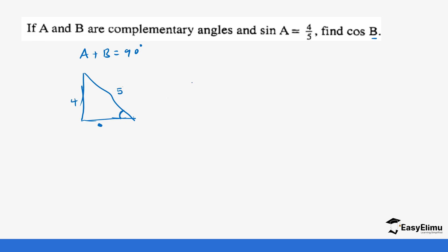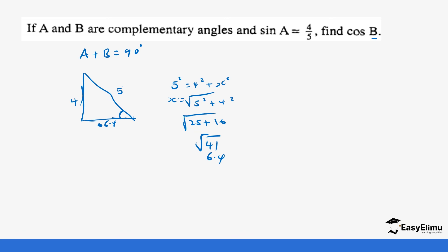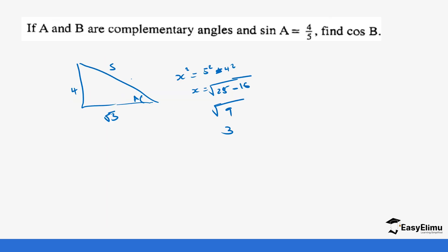Using the Pythagorean theorem: 5 squared equals 4 squared plus x squared, so x equals the square root of 5 squared minus 4 squared, which is the square root of 25 minus 16, giving us the square root of 9, which is 3. So the adjacent side is 3, and cosine a equals 3 over 5.